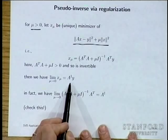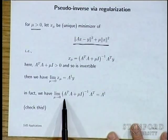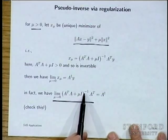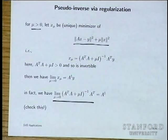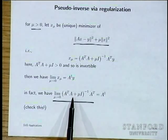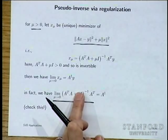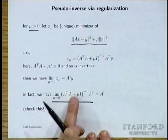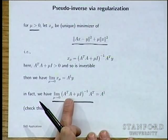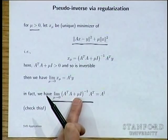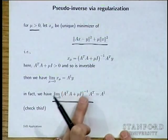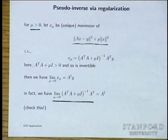As μ → 0, this limit gives the pseudo-inverse. The pseudo-inverse is the limit of A^T A + μI)⁻¹ A^T as μ → 0. For skinny full-rank A this just gives the familiar formula. For fat full-rank A, A^T A is not invertible, but A^T A + μI is invertible for any positive μ, and the limit converges to A^T(A A^T)⁻¹. Even if A is not full rank, this converges to the pseudo-inverse.